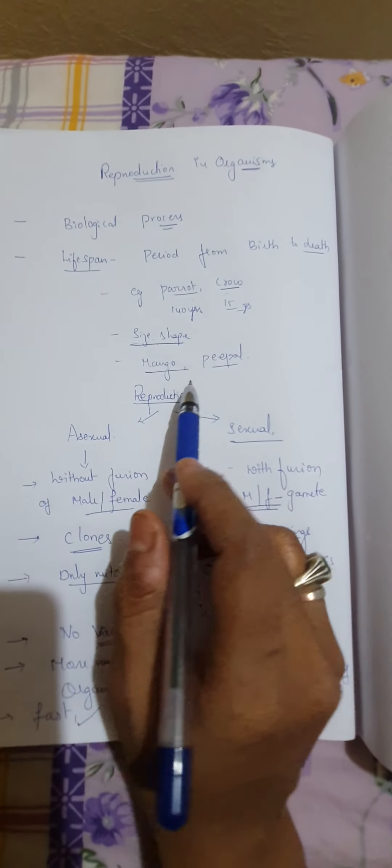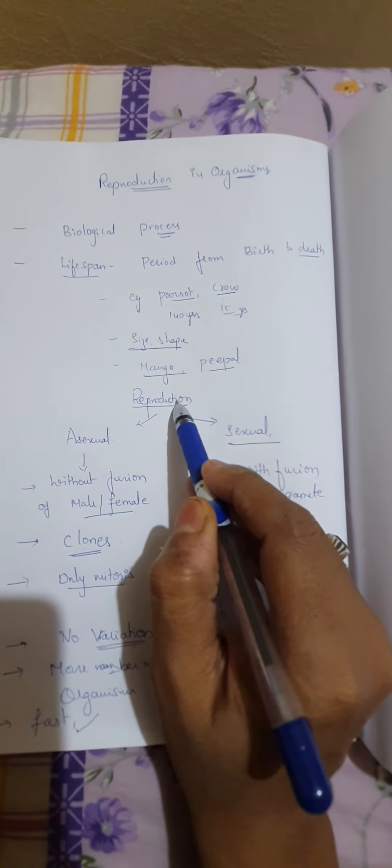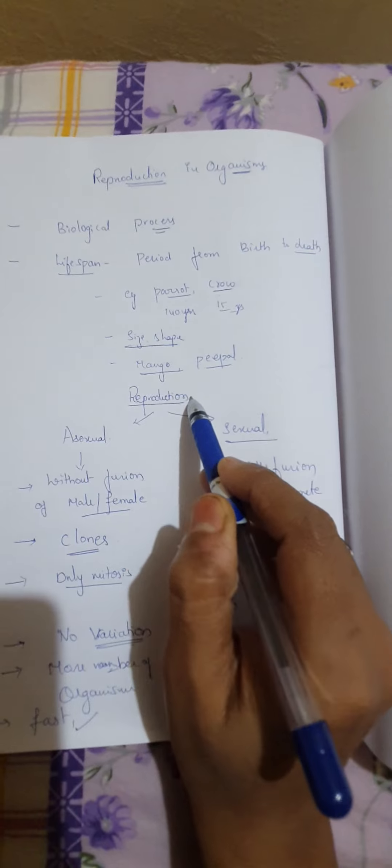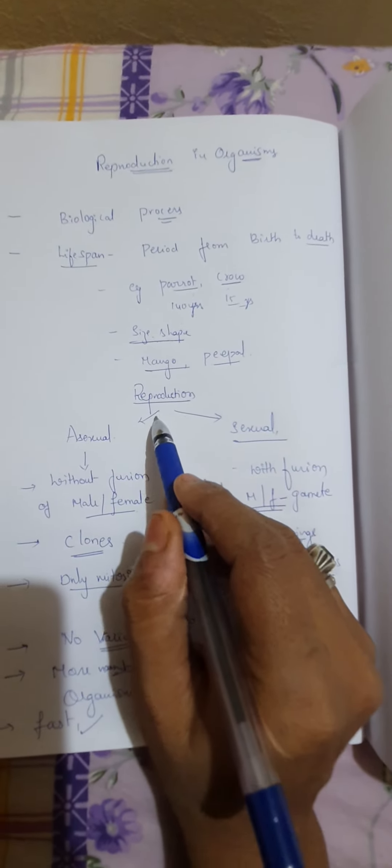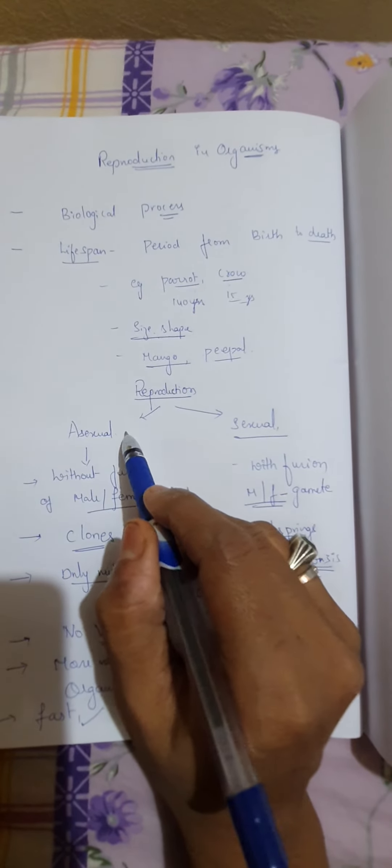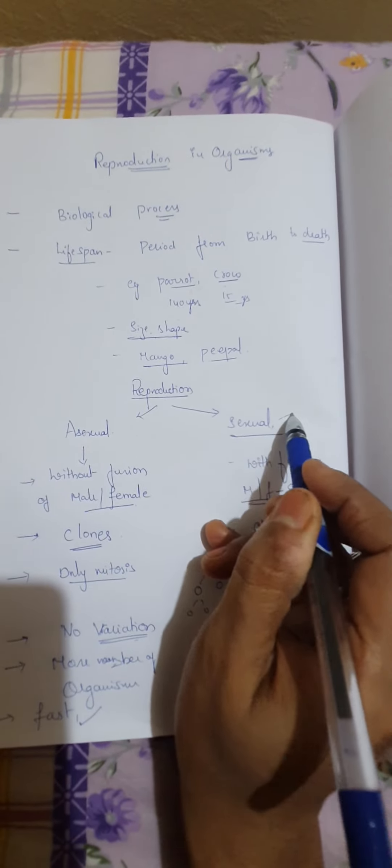Now first of all, what is meant by reproduction? We studied that it's a biological process of giving birth to the younger ones. Now, reproduction is of two types: asexual reproduction and sexual reproduction.